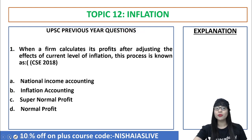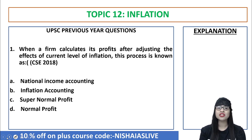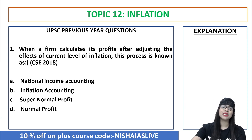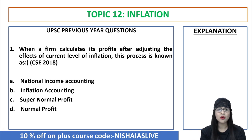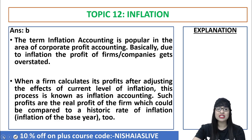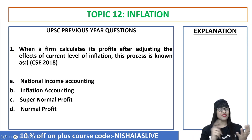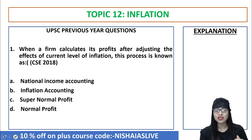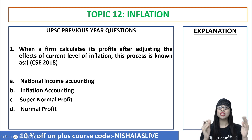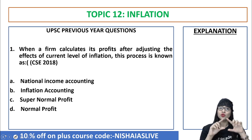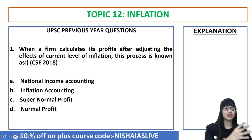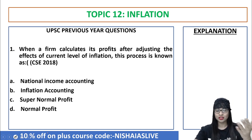It's time to test what we studied. One important question from the inflation topic from UPSC Prelims 2018: 'When a firm calculates its profit after adjusting the effects of current level of inflation, this process is known as what?' Options: National income accounting, inflation accounting, supernormal profit, or normal profit. The answer is option B — inflation accounting. This shows why we studied inflation accounting — UPSC is very smart and wants to test your knowledge on these concepts related to inflation.